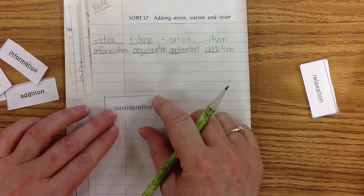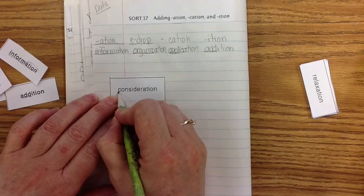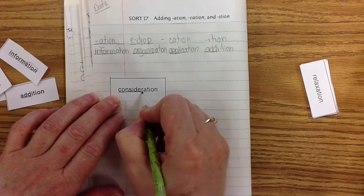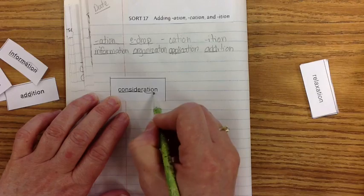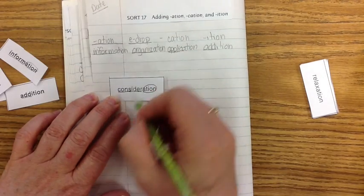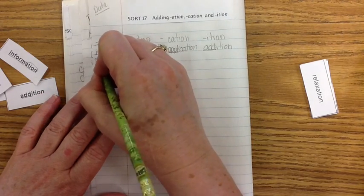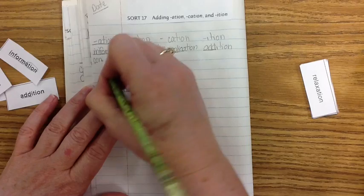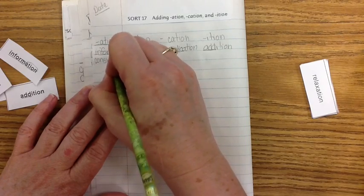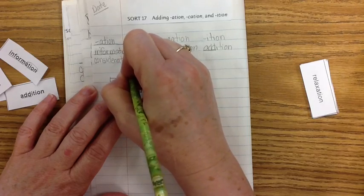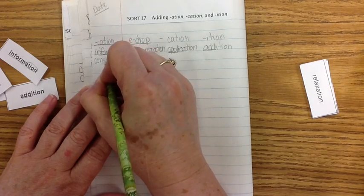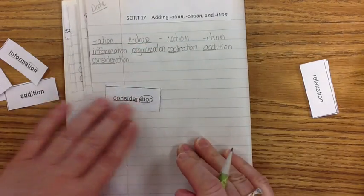Let's look at another word. Let's look at consideration. And we have consider. There's our base word. So where would that go? A-T-I-O-N. We don't drop an E. We just put consider. So C-O-N-S-I-D-E-R-A-T-I-O-N. So underline consider.